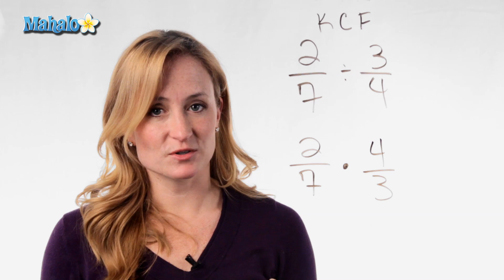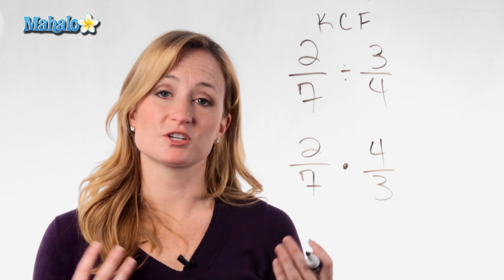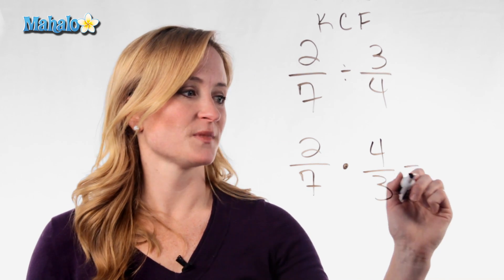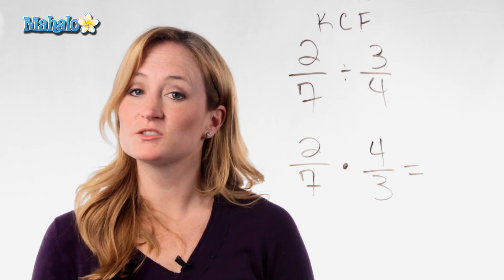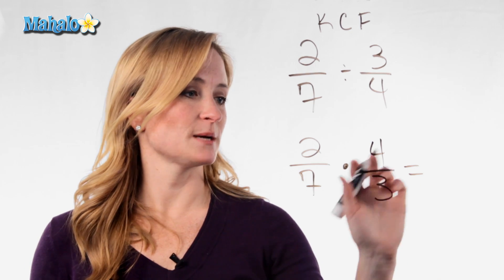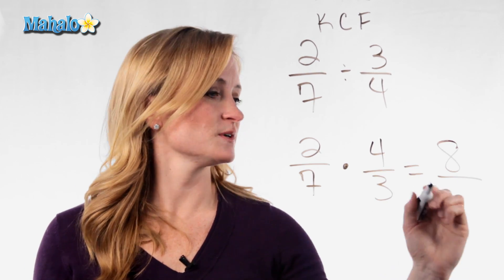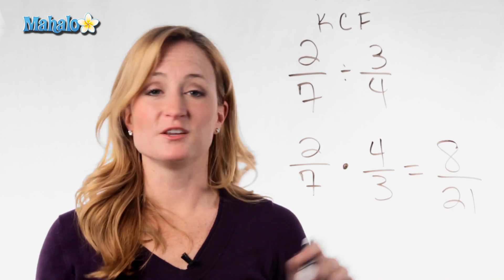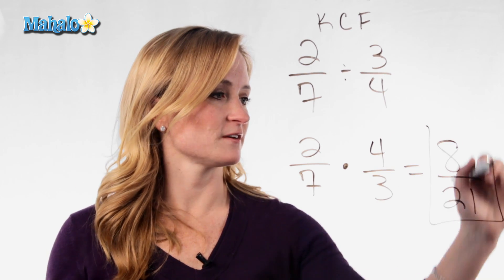So any time you're dividing fractions, you're just going to turn it into a multiplication problem and then it's simple. Because when multiplying fractions, you just multiply straight across. 2 times 4 is 8 and 7 times 3 is 21. And you can't reduce that fraction, so there's your final answer: 8 over 21.